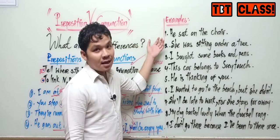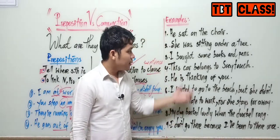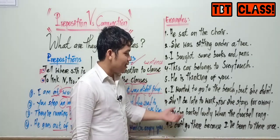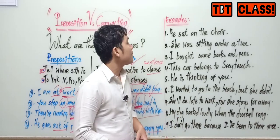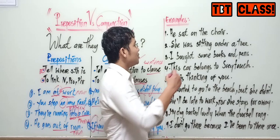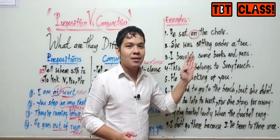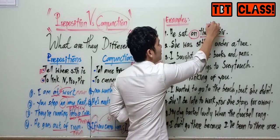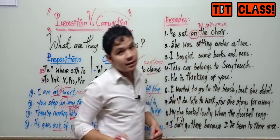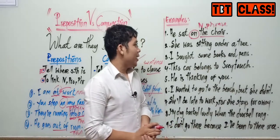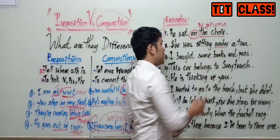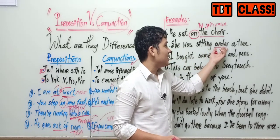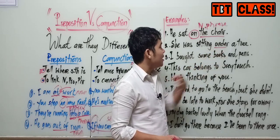Now let's move to nine practice examples. From number one to number five it is simple sentences. From number six to number nine it is compound or complex sentences where we use conjunction to link two sentences together. Number one: "He sat under the chair." "Under" is the preposition — it tells where did he sit. After the preposition you see a noun phrase. Number two: "She was sitting under a tree." "Under" is the preposition — it tells where was she sitting.